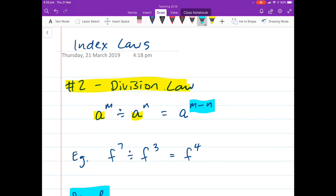So, example, f to the power of 7 divided by f cubed. We take f and we do the 7 subtract the 3 to leave us with 4.